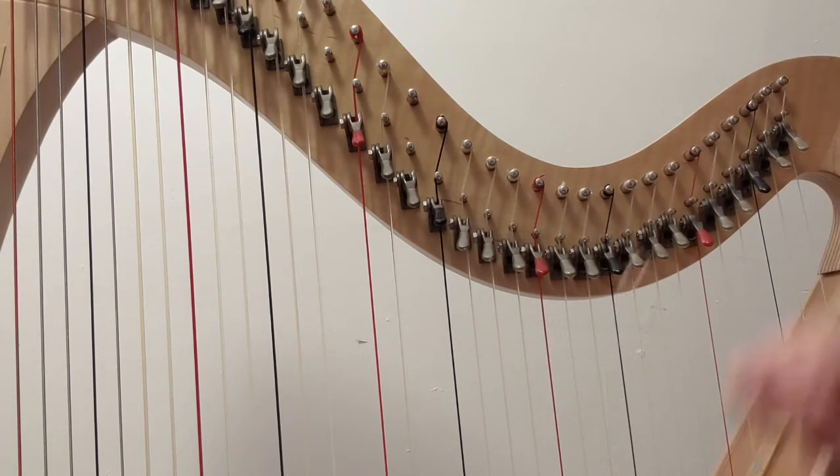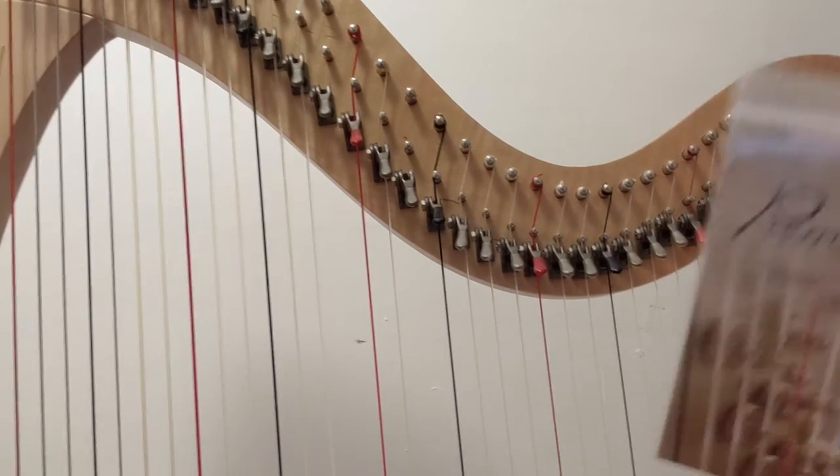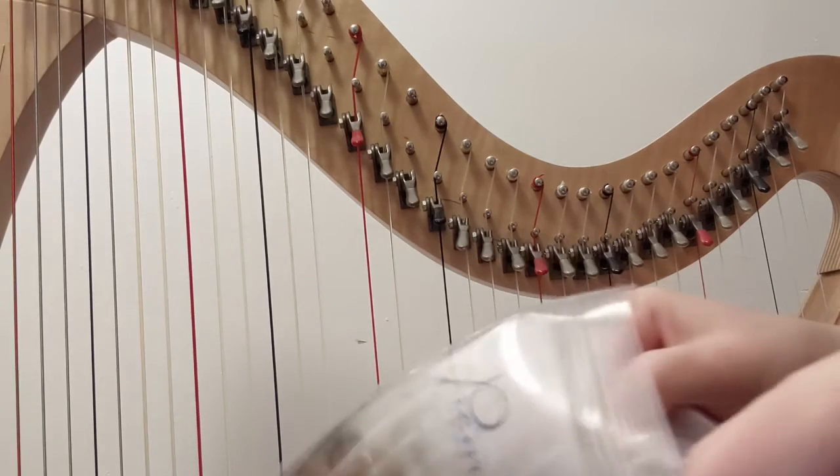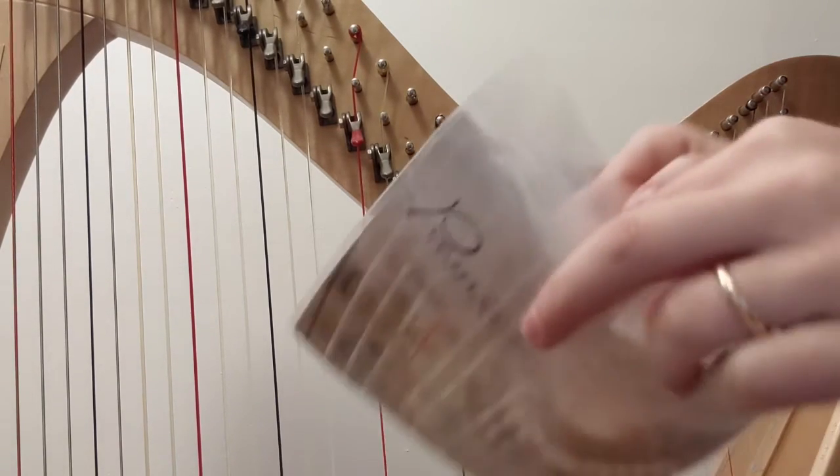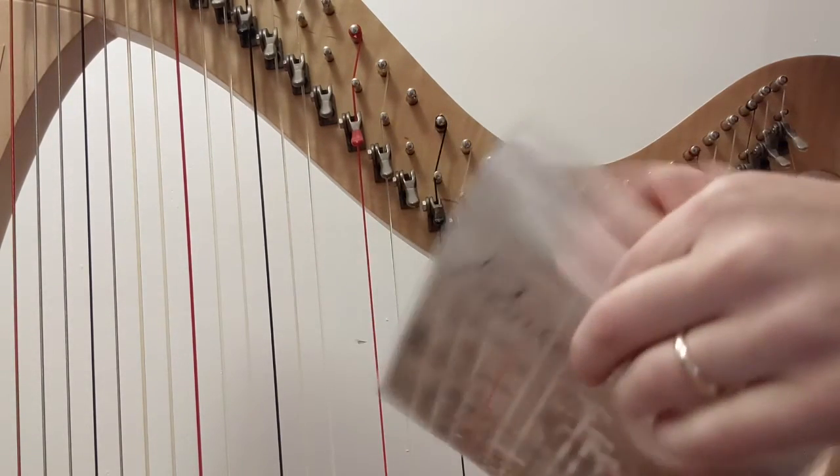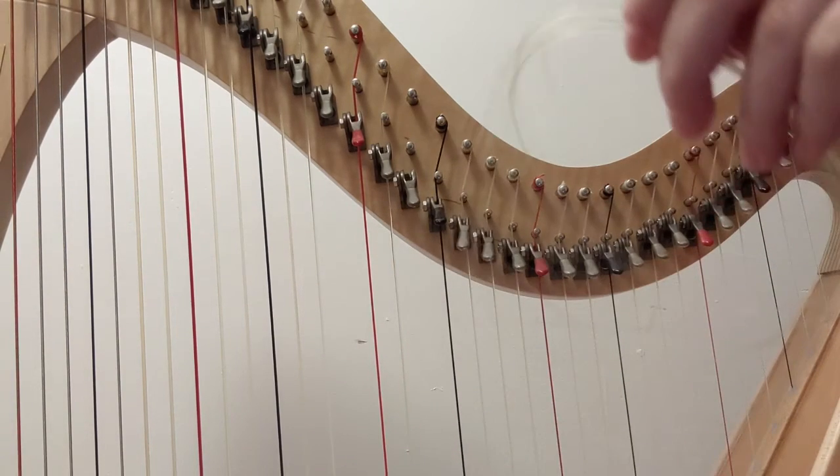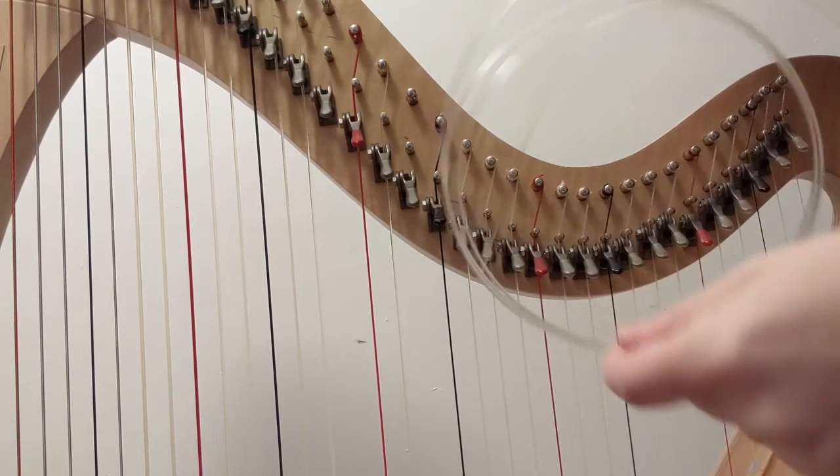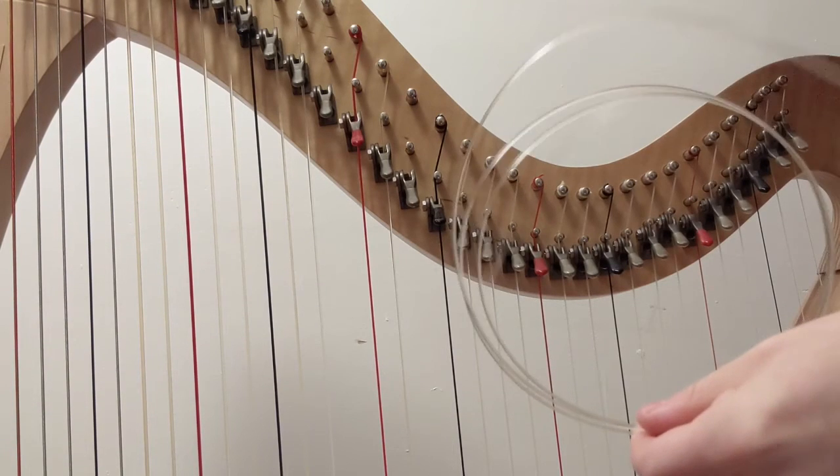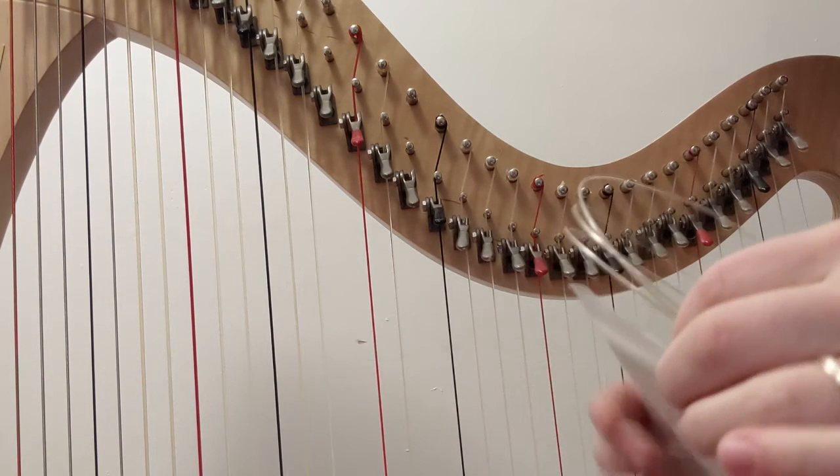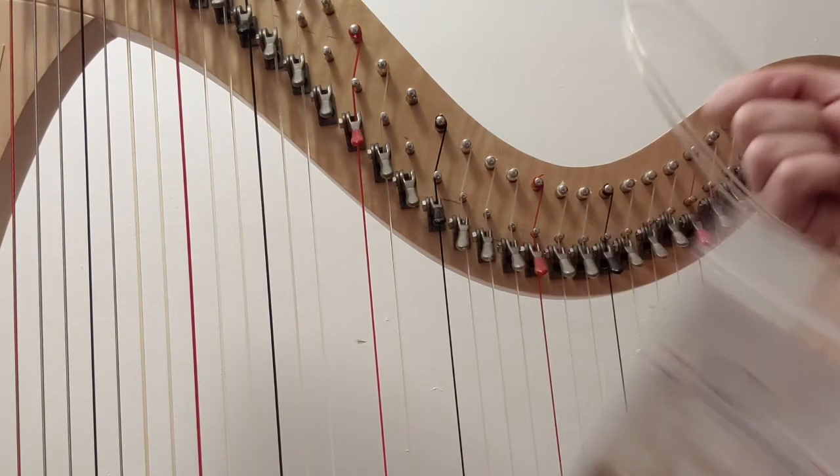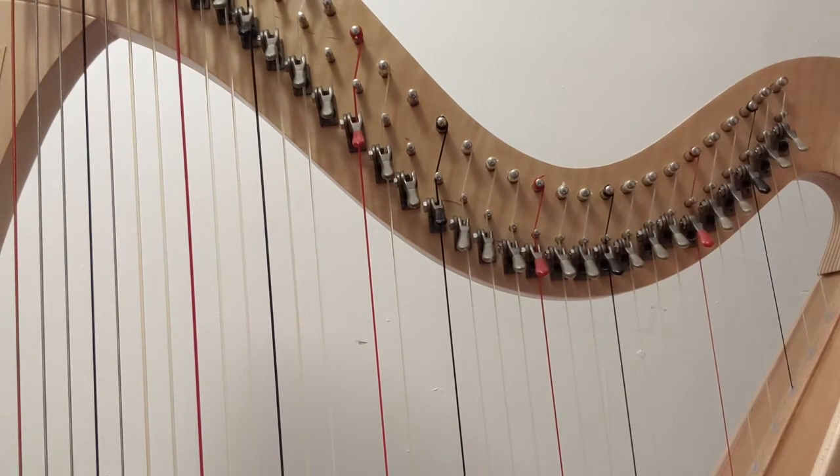If at any point you're missing a string, like let's say I didn't have a fourth octave E, I could use its neighbor to replace it with. So I could use fourth octave D. I could in theory use fourth octave F also, the thickness would be okay, but because that's a colored string I would not use it. For instance, if you're missing a third octave A, I could use a third octave G or B to replace it. While not ideal, it won't damage your harp at all.